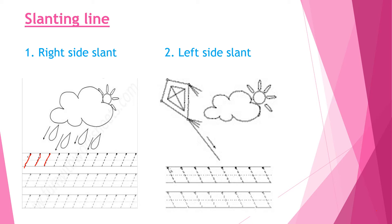Okay, so now next is left side slanting line. We will start from the top red line again and bring our pencil down till the 2nd blue line. We start from the top red line, which is at the very top, and trace down to the 2nd blue line. Okay children?